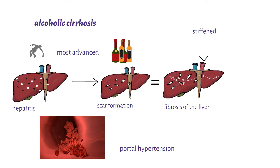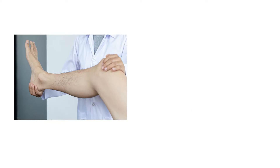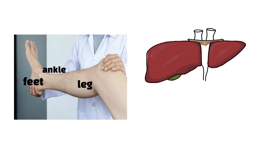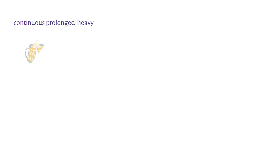One will present with swelling of the feet, ankles, and legs due to fluid accumulation. The liver and spleen will also be enlarged. Over 60% of people with alcoholic liver disease are attributed to continuous prolonged heavy drinking.